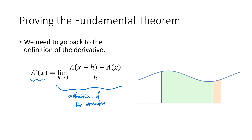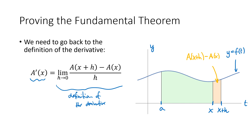To understand what's going on, I've drawn my original function y equals f of t, with a t-axis and a y-axis. Here's a, my starting point for the area, then x, and then x plus h. We're starting with our x value, fudging it a little bit, moving it up slightly to x plus h, and thinking about what's the difference between the area from little a to x plus h minus the area from little a to x. That's going to be a little sliver at the end: a of x plus h minus a of x.